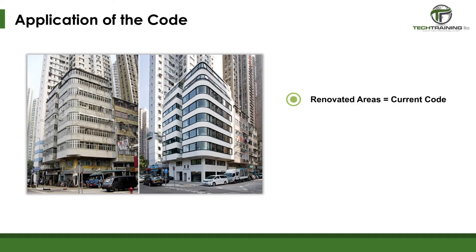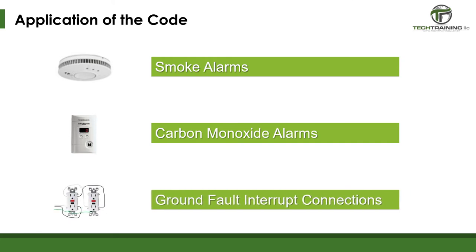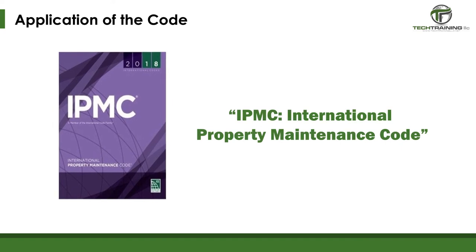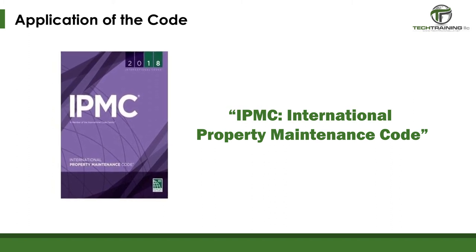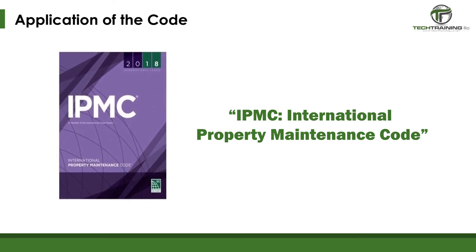There are some instances where existing buildings will be affected by the code even when renovation or alteration is not planned. A good example is if the building or home is going to be sold. Many jurisdictions, especially in Massachusetts, require that smoke alarms, carbon monoxide alarms, and ground fault interruption connectors be brought up to the current code before the building can be sold. Also, some jurisdictions have adopted maintenance codes. The ICC now has the IPMC, the International Property Maintenance Code. Where adopted, the IPMC provides for continued use and maintenance of plumbing, mechanical, electrical, and fire protection systems in existing residential and non-residential structures, requiring upgrades even when there is no renovation or alteration.